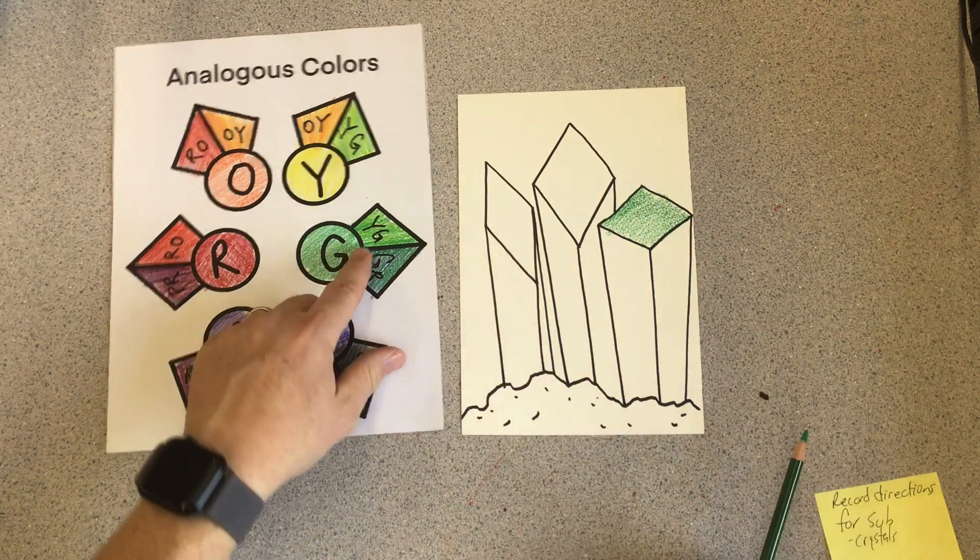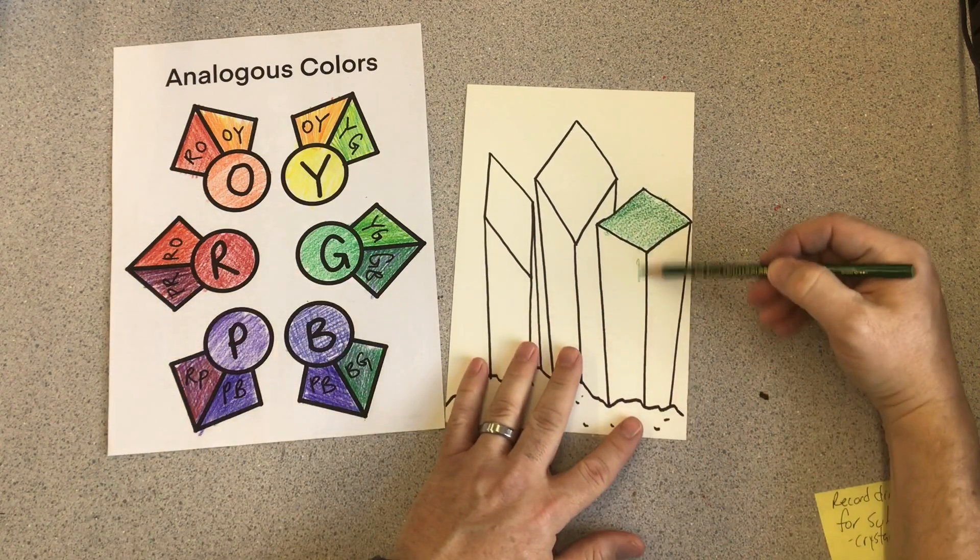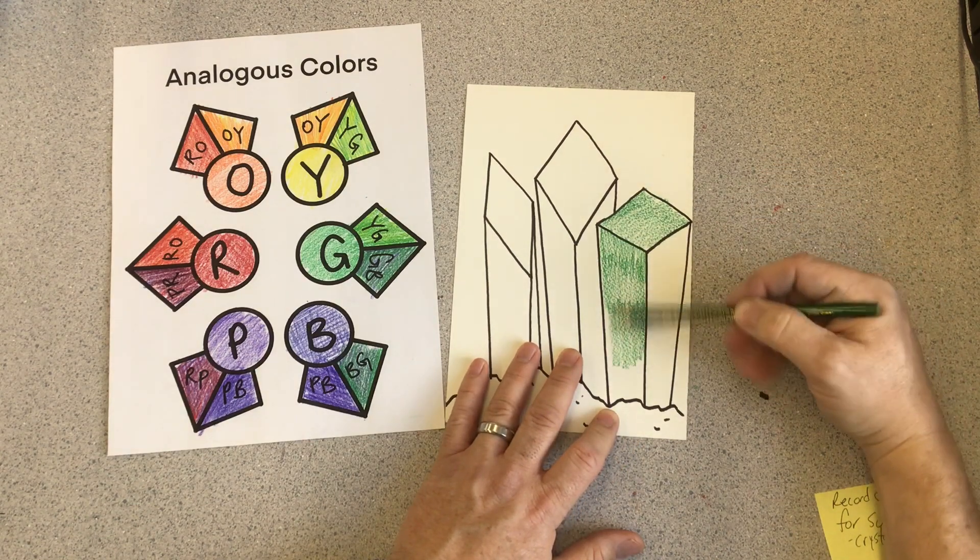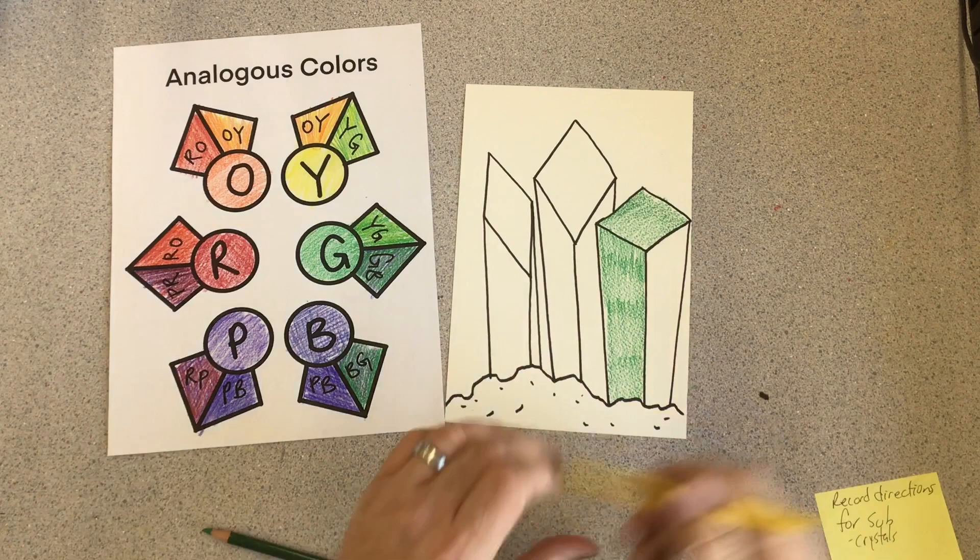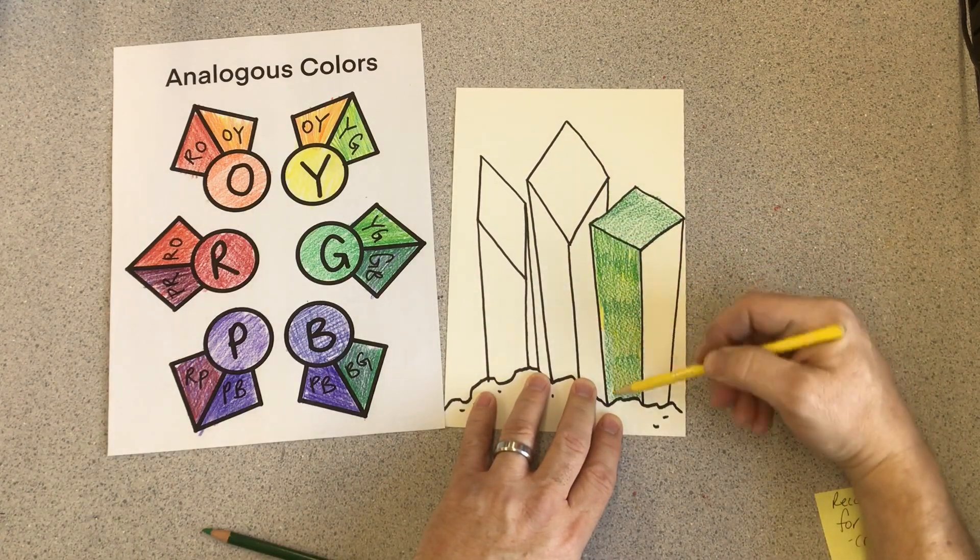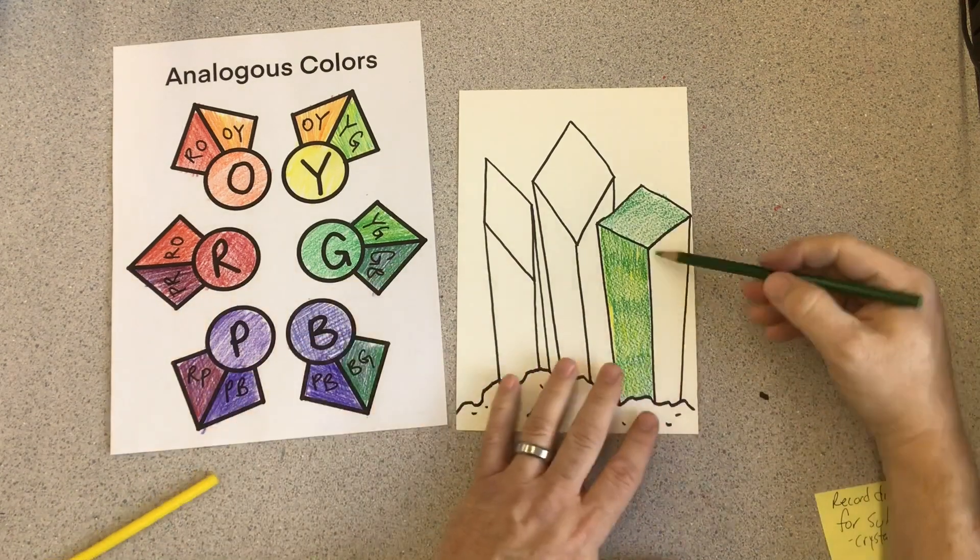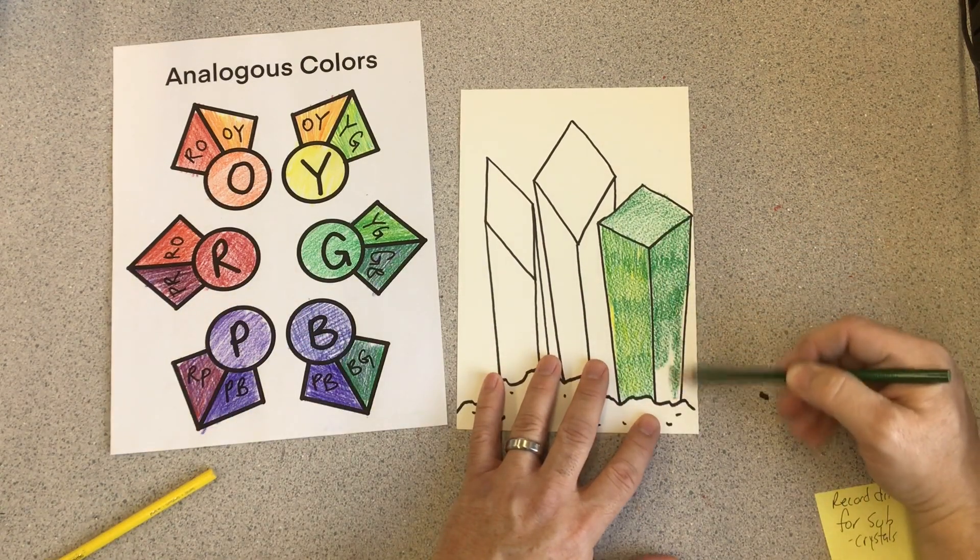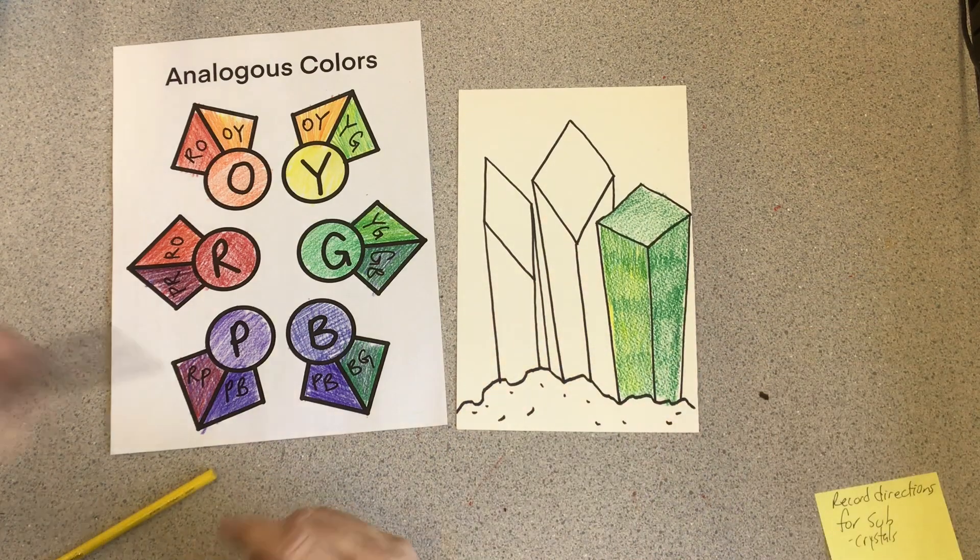But then on one side, I'm going to go yellow-green, so I'm going to use green, just like I did at the top. And then I'm going to blend with yellow. And then on the other side, I'm going to go back to green. But instead of yellow, I'm going to use the other analogous color, blue.